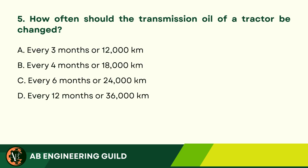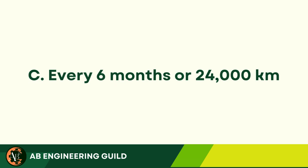Question 5: How often should the transmission oil of a tractor be changed? A. Every 3 months or 12,000 kilometers. B. Every 4 months or 18,000 kilometers. C. Every 6 months or 24,000 kilometers. D. Every 12 months or 36,000 kilometers. Answer: C. Every 6 months or 24,000 kilometers.